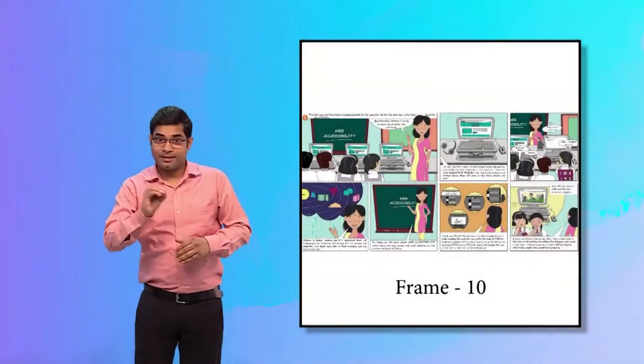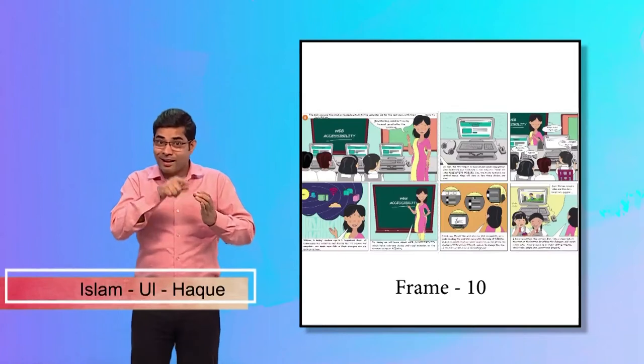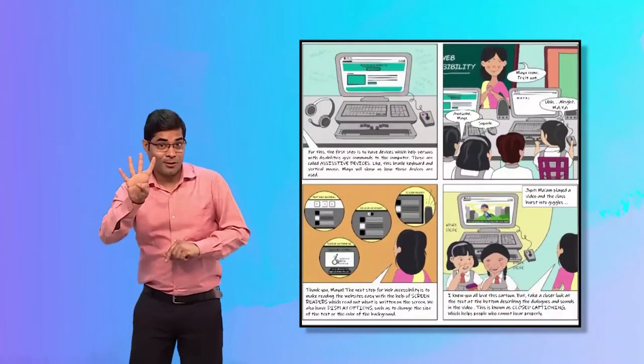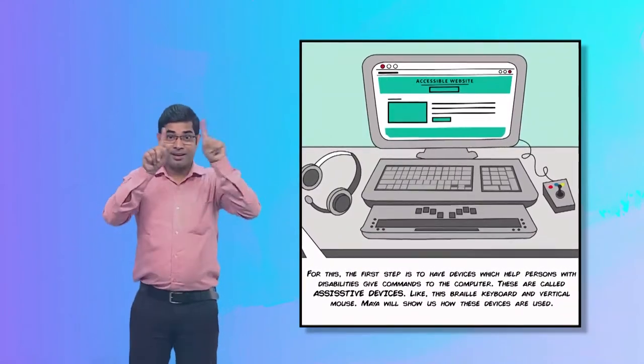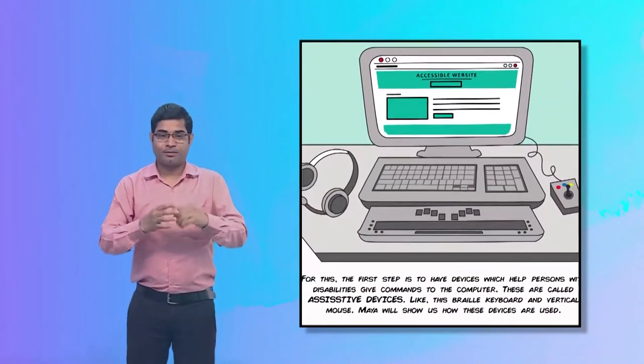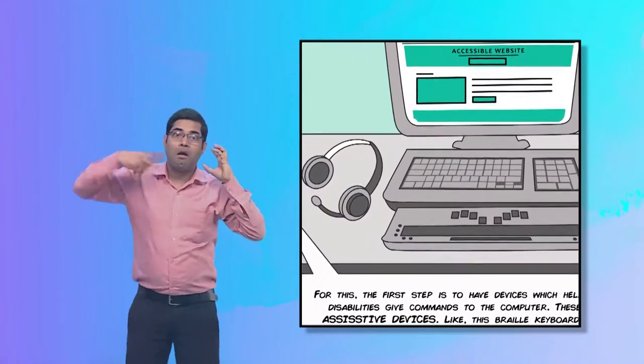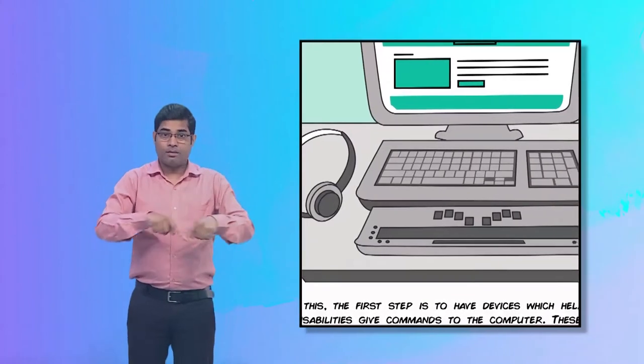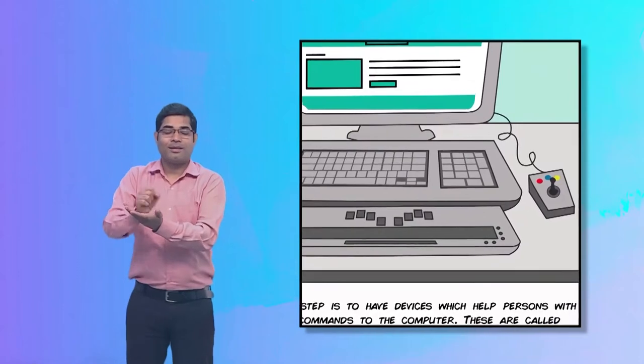Frame 10 is a continuation of the computer class and has four pictures. The first picture shows a computer with assistive devices such as special headphones which can make voices louder, keyboards with braille buttons, and a joystick mouse.